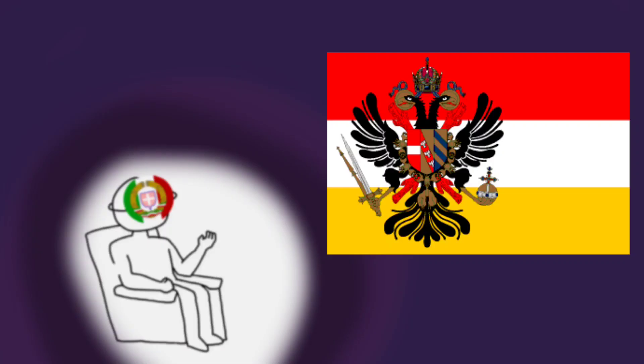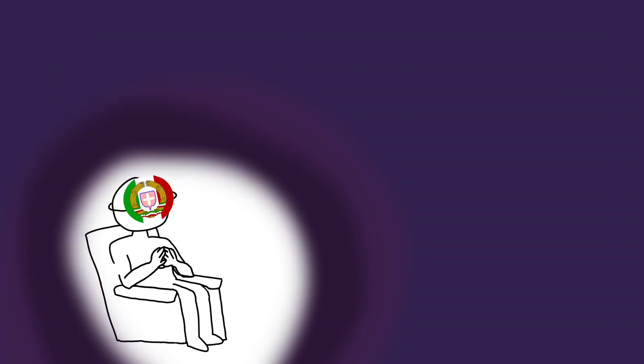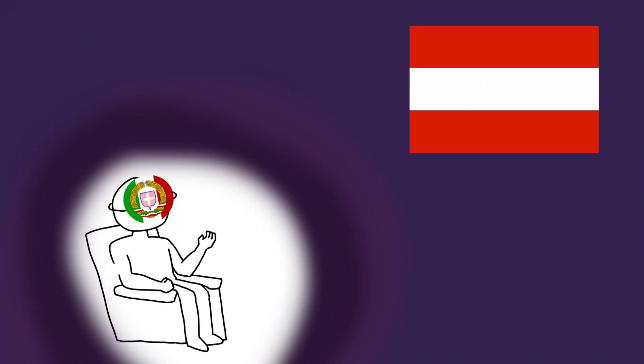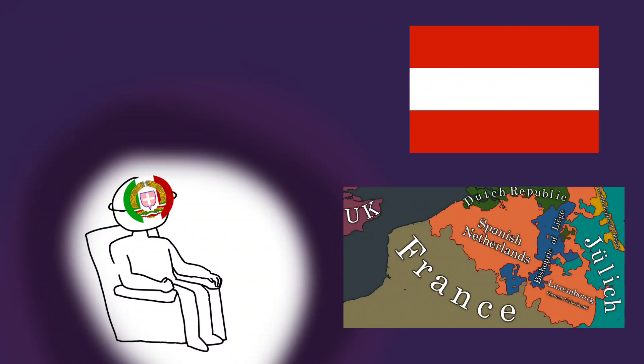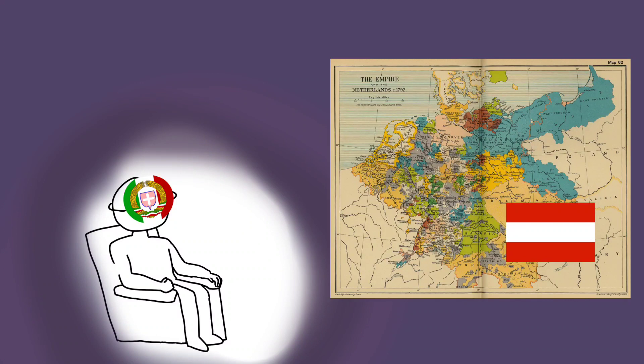The Austrian Netherlands was a territory which covered much of what is today Belgium and Luxembourg. Despite it being considered a part of the greater region of the Netherlands, this territory was majority Catholic and had been in Austrian control since 1714, when the Spanish transferred it to the Austrians at the end of the Spanish War of Succession. In the second half of the 18th century, Joseph II von Habsburg, Emperor of the Holy Roman Empire and ruler of Austria and consequently the Austrian Netherlands, came into power.